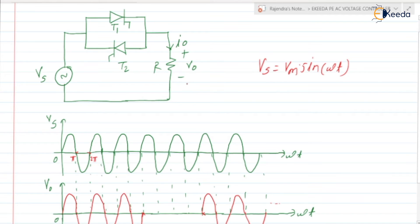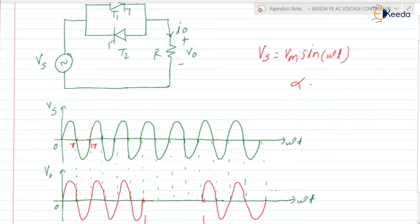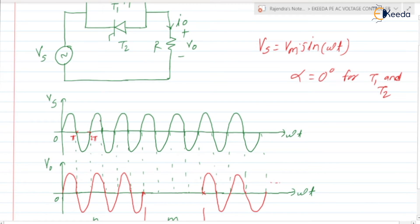In the Integral Cycle Control, the first thing is we are keeping alpha equal to zero degrees for both thyristors T1 and T2. So at omega t equal to zero, thyristor T1 is turned on; at pi, T2 is turned on; at 2 pi, T1 turns on; at 3 pi, T2 turns on; similarly at 4 pi, T1 and T2 alternate. So like this, the thyristors will be turning on.